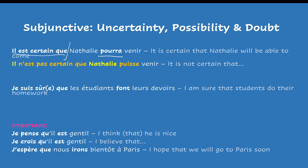However, il n'est pas certain que Nathalie puisse venir — it is not certain that Nathalie will be able to come. In that case, in the first clause, the expression is negative and expresses uncertainty. Therefore, you will use the subjunctive in the second clause. Notice as well that you have two different subjects here, which is very important to be able to use the subjunctive with those expressions.